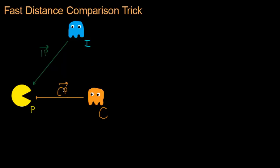And we get these vectors as before by subtracting the points, P minus C and P minus I. And then we can compare the lengths of these two vectors to figure out who is closer to Pac-Man.